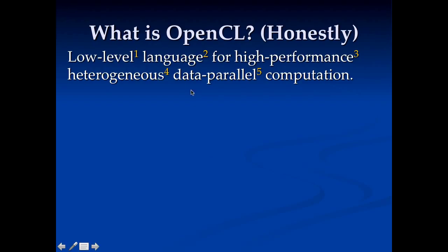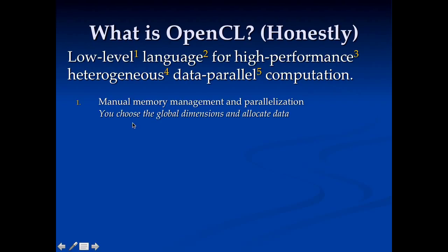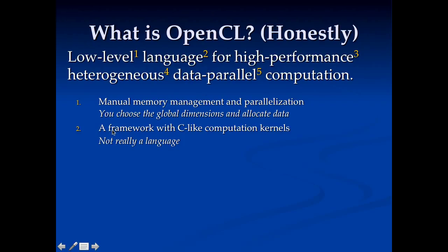Let's come back to what we started with — what is OpenCL honestly? I said before it was a low-level language for high-performance heterogeneous data parallel computation. It is low-level: you have to manually manage memory and parallelization, allocate things, choose global dimensions — you've got to do this all by hand. As for 'language,' it's not really a language; it's more of a framework with C-like computation kernels. A language implies something more elegant and self-contained, and OpenCL definitely isn't that.